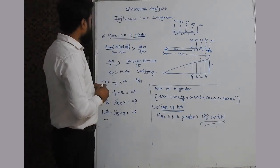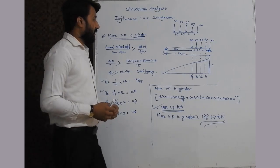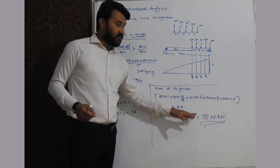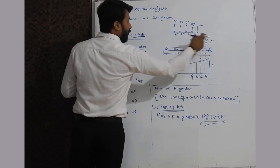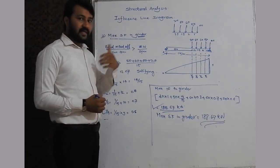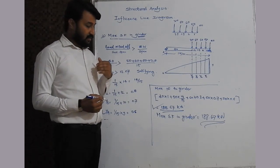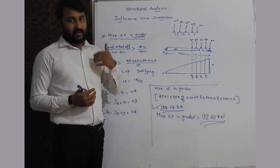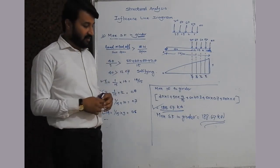To summarize: to find the maximum shear force in the girder, we calculate the shear force by keeping the load train on A and then on B, compare both values, and take the maximum. Here, the maximum shear force is at B with the 40 kN load positioned there. In the next video, we will cover the maximum bending moment under a given load, then maximum bending moment under a given section, and finally the absolute maximum bending moment. Thank you.